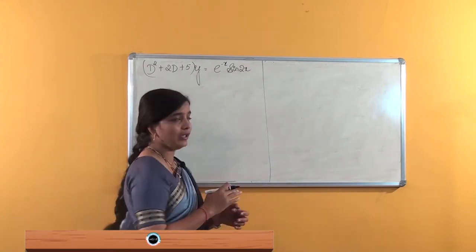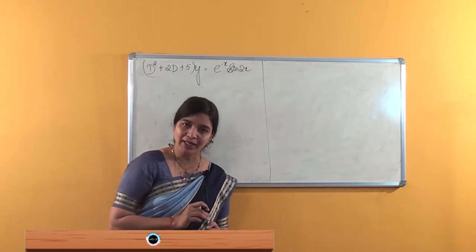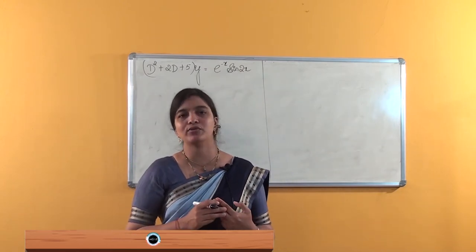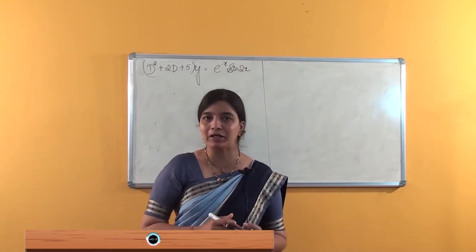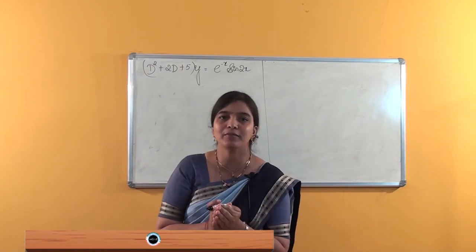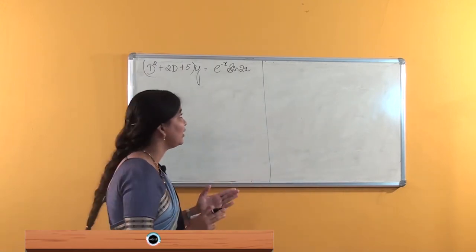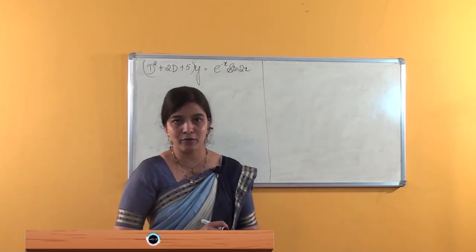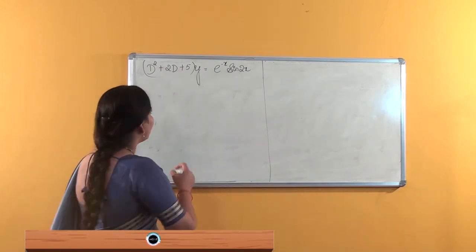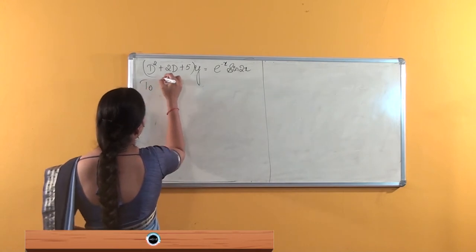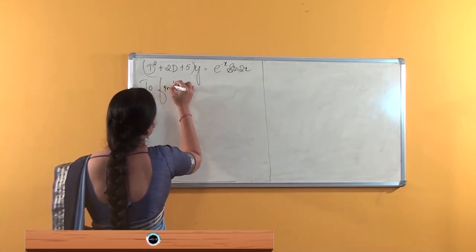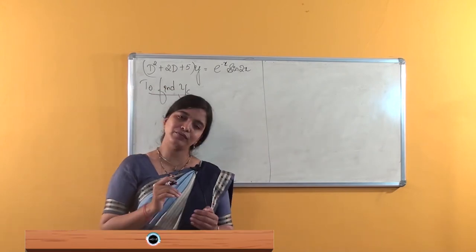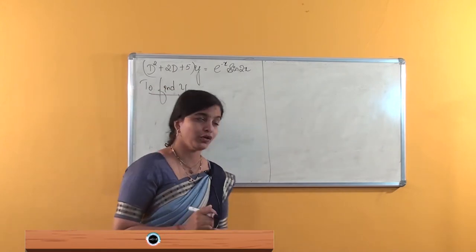As mentioned in the previous problem, to find the general solution you have to find the particular solution as well as the complementary solution — the sum of that is nothing but the general solution. Clearly, it is a non-homogeneous linear differential equation. To find the particular solution, you have to find the complementary solution first. We will find the complementary solution, then we will move on to the particular solution.